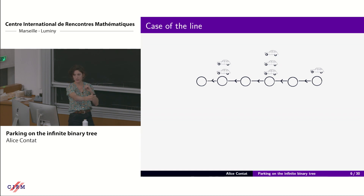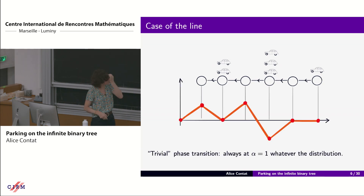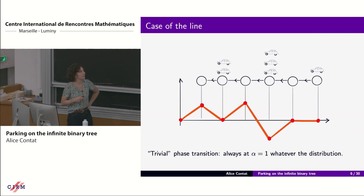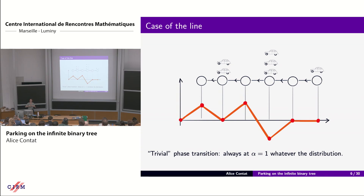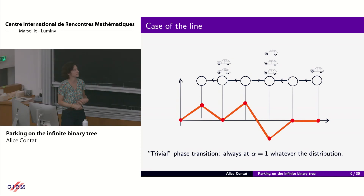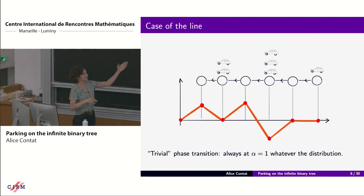When our tree is just a line, we can encode the car configuration by a random walk whose increments are one minus the number of cars arriving at each vertex. For example: no cars arriving gives increment one, two cars gives increment minus one, three cars gives increment minus two, and so on. All cars manage to park if this random walk stays non-negative until the end of the line. Just looking at the drift of this random walk, you see this has a trivial phase transition — it happens when you have one car per vertex on average.